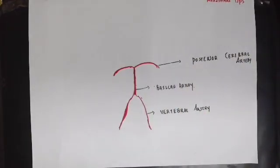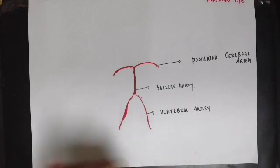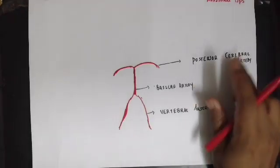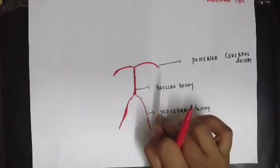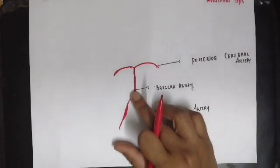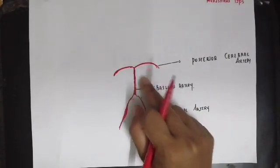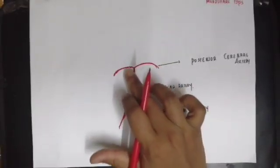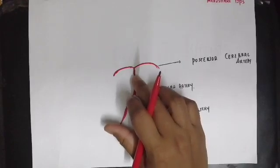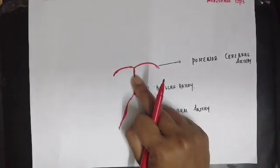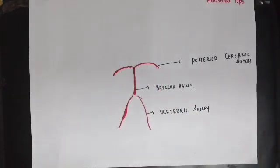That is all about the vertebral basilar system. The two vertebral arteries combine to form the basilar artery, and the basilar artery terminates into two terminal branches — the two posterior cerebral arteries. We will now learn about the internal carotid system.